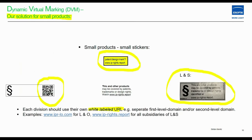Our solution for small products uses small stickers. On the right-hand side you see the sticker of Light and Safety, and on the left side you also see an option with a QR code.